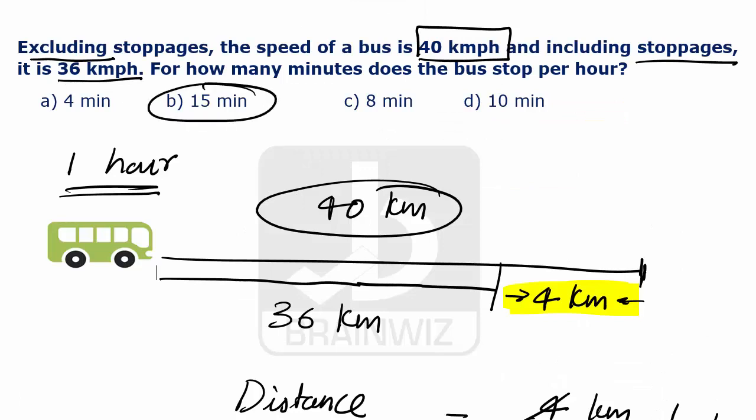So, option D is the correct answer. Thank you. Think aptitude, think brainwaves.